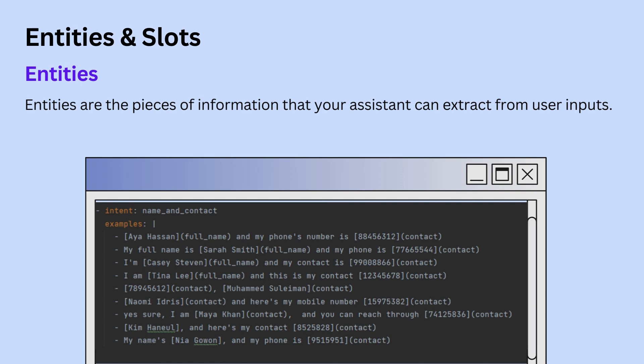How are entities labeled, and how can we define the entities we would like to extract? Rasa uses a simple convention: the word to be extracted as an entity should be surrounded by square brackets. For example, the intent 'name and contact' uses the sentence 'Ayah Hasan and my phone number is 88456312.' The entity 'Ayah Hasan' is surrounded by square brackets, and the entity type is mentioned directly after in parentheses. Similarly, the phone number to extract is surrounded by square brackets, and the entity type 'contact' is in parentheses.